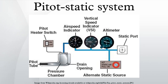Some aircraft may have a single static port, while others may have more than one. In situations where an aircraft has more than one static port, there is usually one located on each side of the fuselage. With this positioning, an average pressure can be taken, which allows for more accurate readings in specific flight situations. An alternative static port may be located inside the cabin of the aircraft as a backup for when the external static ports are blocked.